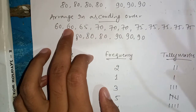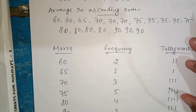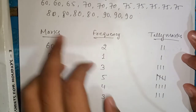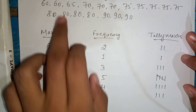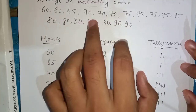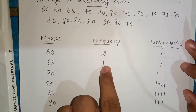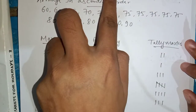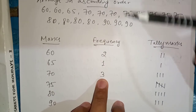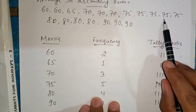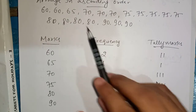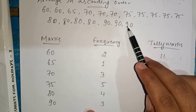If you see here, 60 appears two times, so we write frequency 2. Next is 65 — it appears only one time, so we write frequency 1. Next is 70 — it appears one, two, three times, so we write 3. Next, 75 appears one, two, three, four, five times — so frequency is 5. Then 80 appears one, two, three, four times — so we write 4. And last is 90, which appears one, two, three times — so frequency is 3.